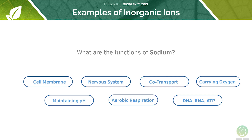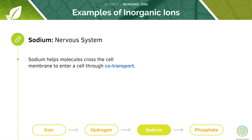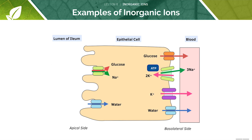What are the functions of sodium? Sodium ions are responsible for co-transport and are also important in the nervous system. Sodium and potassium ions are very important in the nervous system and for communication between neurons. Sodium helps molecules such as glucose and amino acids cross the cell membrane through a process called co-transport. A great example is in the digestive system, where sodium plays a key role in helping glucose be absorbed in the small intestine.